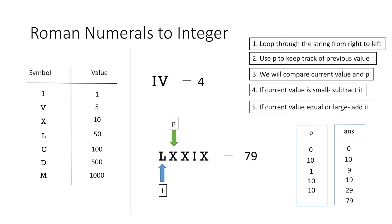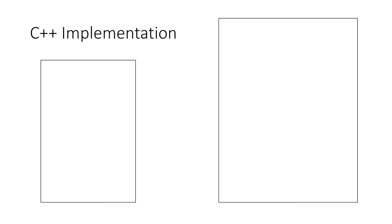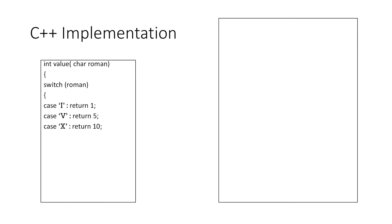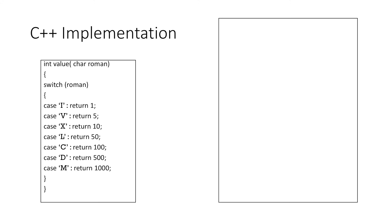Now let's implement this using C++. Firstly we need a function called value which takes in a roman character as an argument and returns its integer value. We use a switch statement to return various values: if the argument is I we return 1, if V we return 5, if X we return 10, if L we return 50, if C we return 100, if D we return 500, and if M we return 1000.